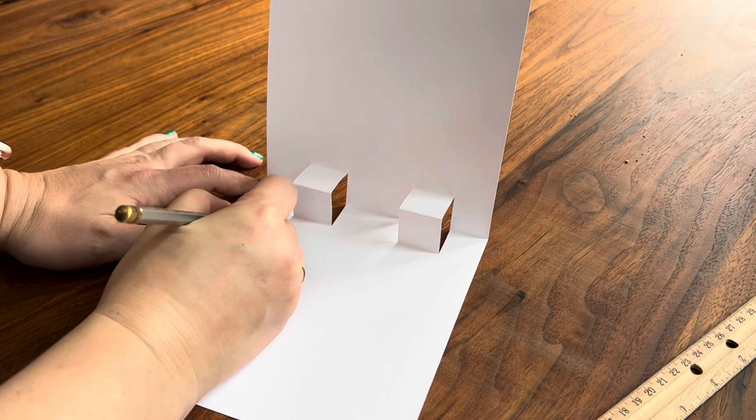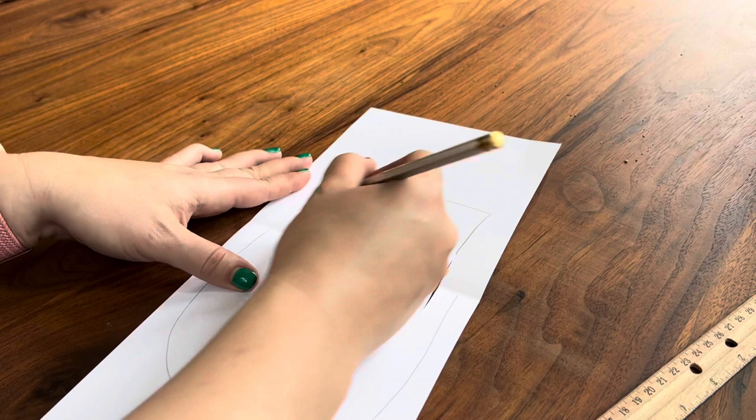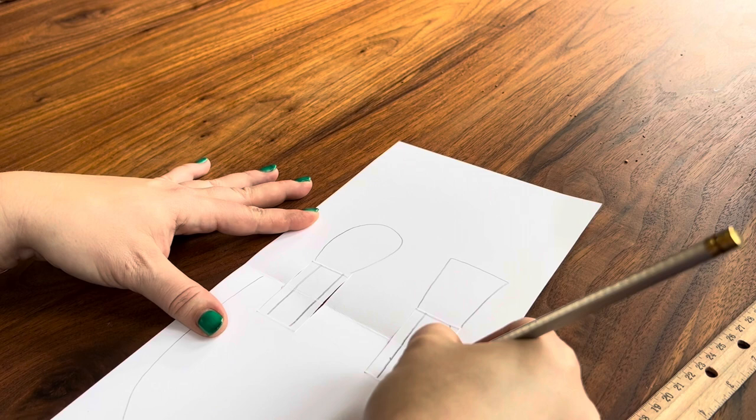Use a pencil to begin to design your room. You can add a rug. You can add backs to chairs or sofas. You can add the arms of those chairs or sofas on the pop-out part.